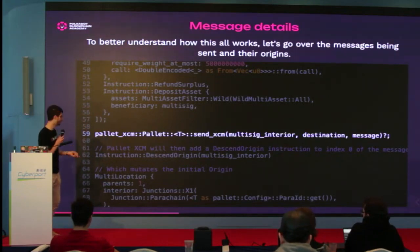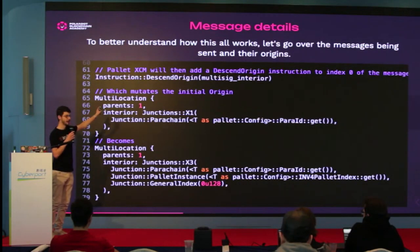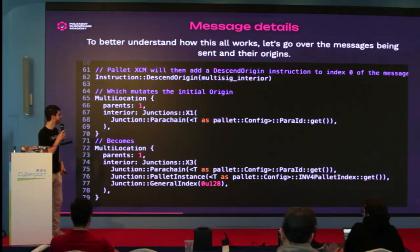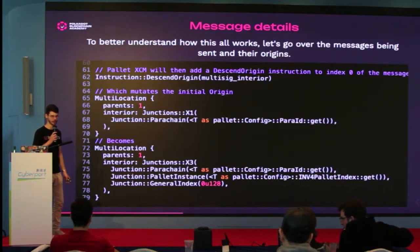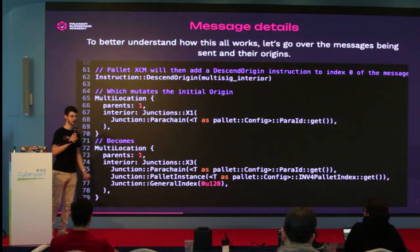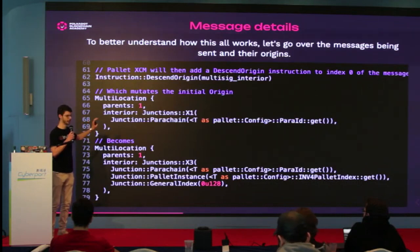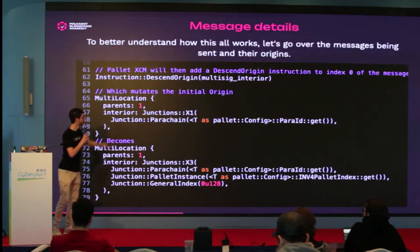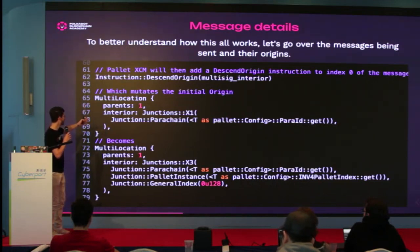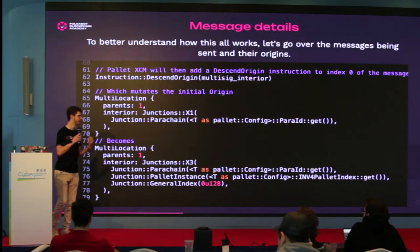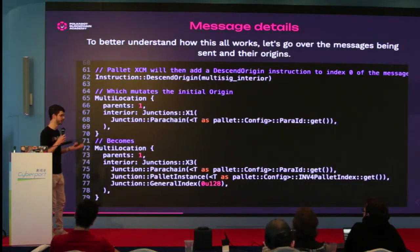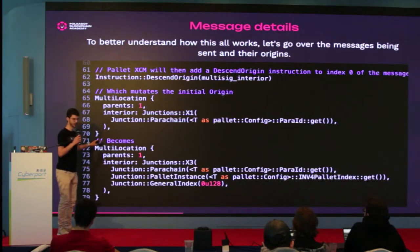The multi-sig interior is used so that pallet XCM can automatically add a descend origin instruction to the beginning of your message. What that will do is convert your XCM origin into what I described earlier, because once it reaches the destination chain, your origin will only be your parachain. This is the initial origin to reach the chain. Most parachains and the relay chain have barriers used to mutate the origin. After the descend origin is computed, this becomes what I showed.